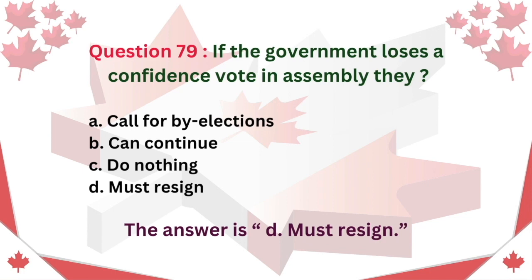Question 79: If the government loses a confidence vote in the Assembly, what happens? A. Call for by-elections. B. Can continue. C. Do nothing. D. Must resign. The answer is D: Must resign.